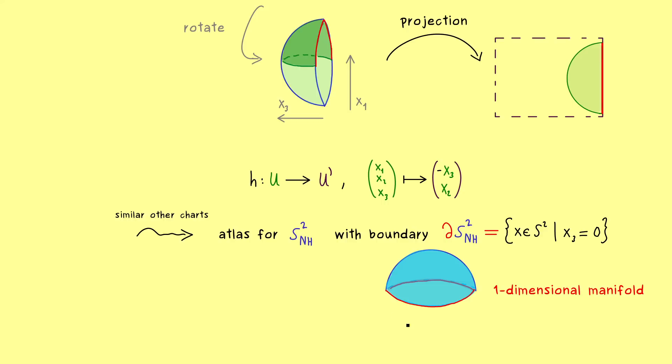This means that we have to extend the tangent spaces and also the orientation from manifolds to manifolds with boundary. This is not so complicated, but we should discuss it, because otherwise Stokes' theorem will not make sense.